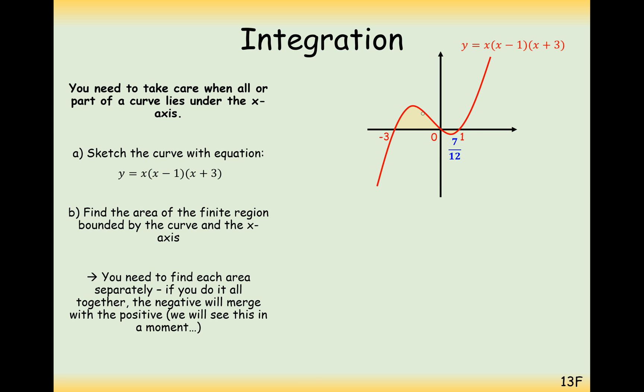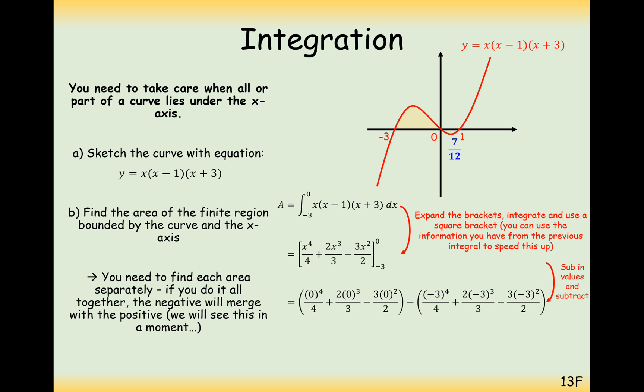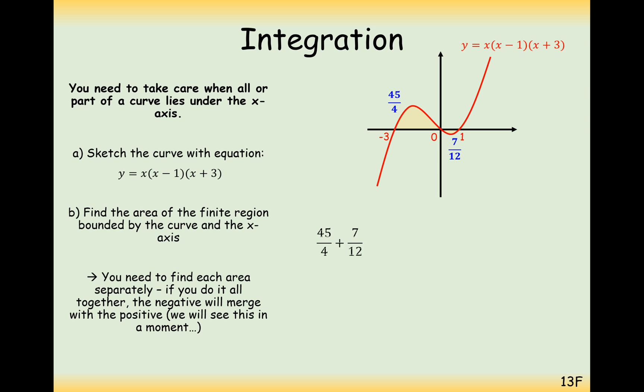Now let's look at the second area here between 0 to minus 3. So just a reminder, 0 is the higher number, so that needs to go on top. Minus 3 is the smaller number, so that needs to go on the bottom. And doing exactly the same thing, we can pretty much use some of the workings we've done before here and substitute in 0, take away the substitution of minus 3. And we should get a positive answer here. We get a positive 45 over 4. So all that's left for us to do now is just to add these two areas together here. So the total area here is 71 over 6.